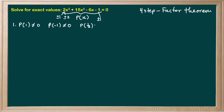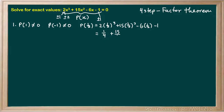Let's try positive 1 half. That gives us 2 times (1/2)³ plus 15 times (1/2)² minus 6 times (1/2) minus 1. Now, (1/2)³ is 1/8, so 2 over 8 reduces to 1/4. Then 15 times (1/2)² is 15 times 1/4, which is 15/4. Then minus 6 times 1/2 is minus 3, and then minus 1. So 1/4 plus 15/4 gives us 16/4, which is 4, and then 4 minus 3 minus 1 is 0.